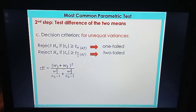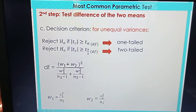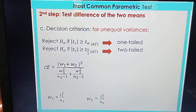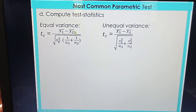In the degrees of freedom formula for unequal variances, we have W sub 1 and W sub 2. W sub 1 is obtained by dividing the variance of the first group by its sample size, and W sub 2 is the variance of the second group divided by its sample size.